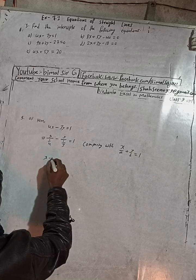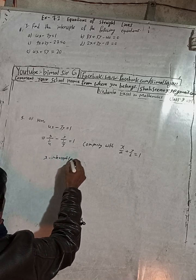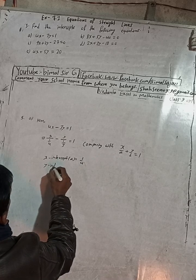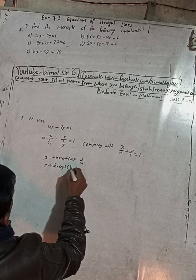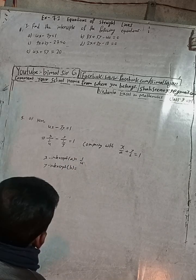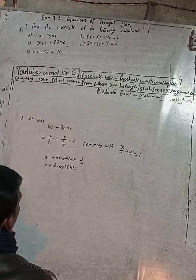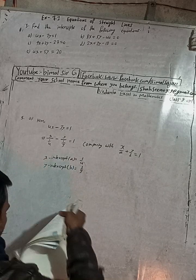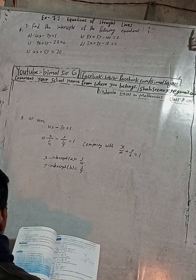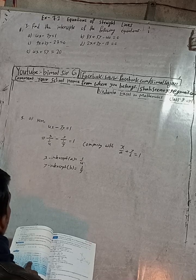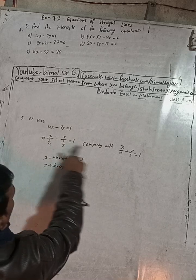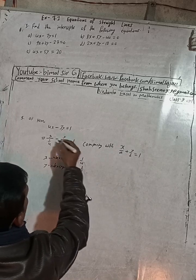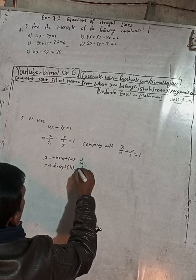Comparing with x/a + y/b = 1, the x-intercept indicated by a is equal to 1/4. The y-intercept indicated by b — here you can see there is a minus sign on the 3y term, so write minus 1/3. If the signs are the same, write plus; when the signs are opposite, write minus. So b equals minus 1/3.